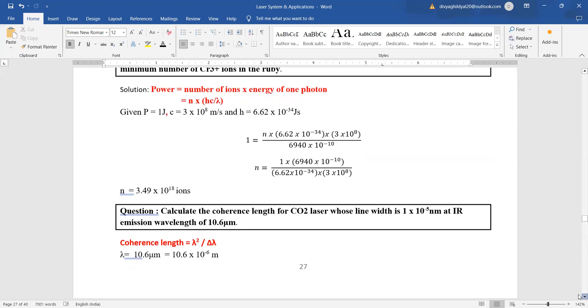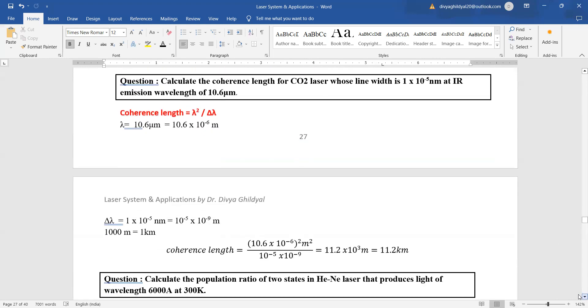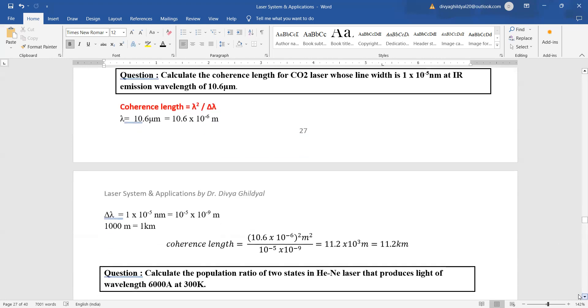Calculate the coherence length for carbon dioxide laser whose line width is 1 times 10 to the power minus 5 nanometer at IR emission wavelength of 10.6 micrometer. Coherence length is equal to lambda square upon del lambda. So lambda is 10.6 micrometer, del lambda is this. You straight away put the value and you are getting the answer.